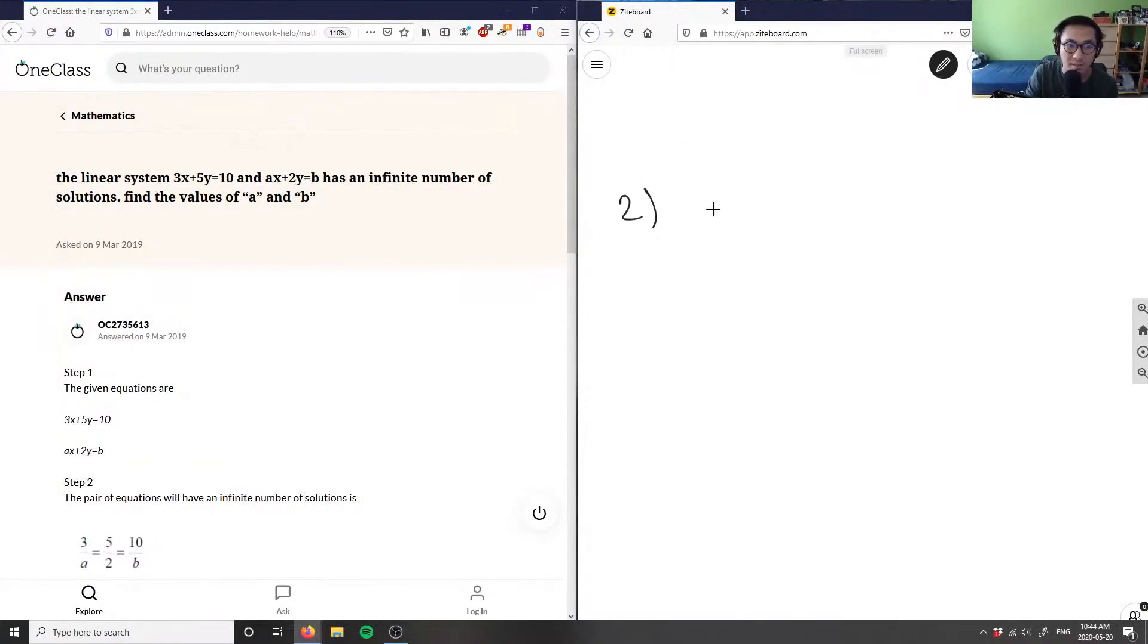The linear system 3x plus 5y equals 10 and ax plus 2y equals b has an infinite number of solutions. Find the values of a and b.